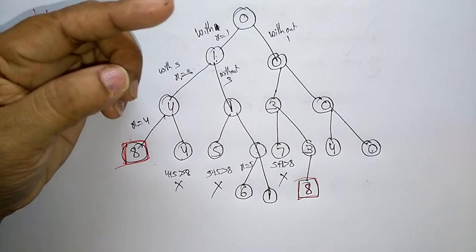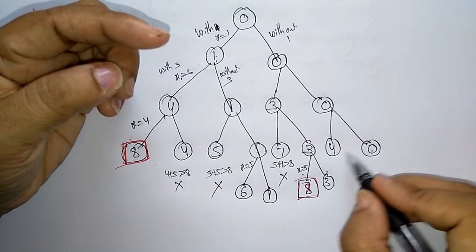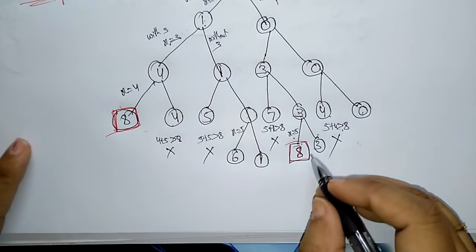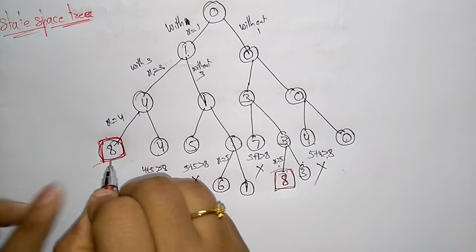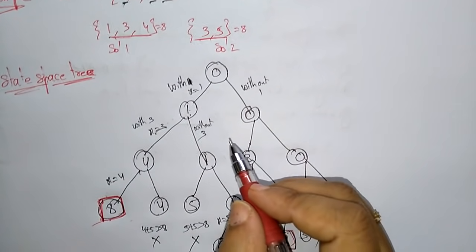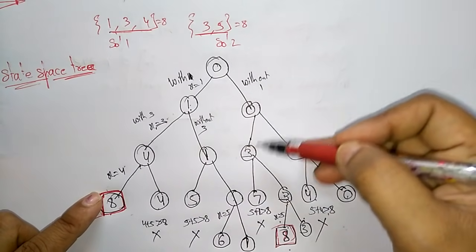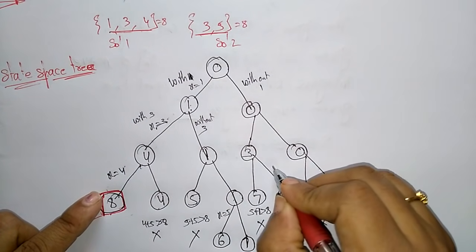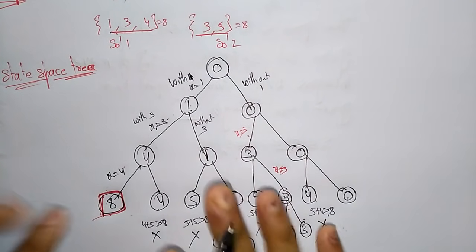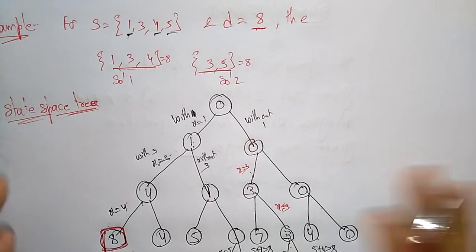The right side without 5, just copy the element. For node 4: 5 + 4 = 9, greater than 8, so ignore. The two possible solutions are: 1 + 3 + 4 = 8, and 3 + 5 = 8. So we get two solutions for the given set. This is Sum of Subsets explained using the state space tree.